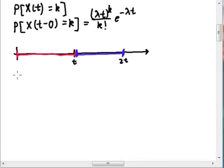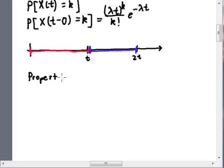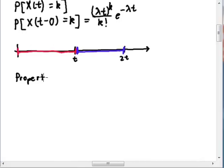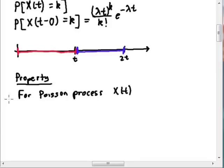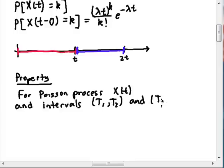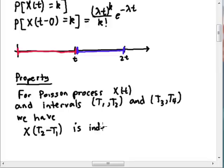So let me describe the property that the Poisson process has. The property is, for Poisson process X of t and intervals T1 to T2 and T3 to T4, we have that X of T2 minus T1 is independent of X of T4 minus T3.